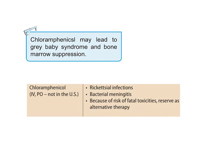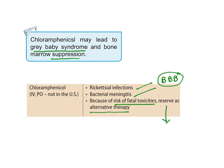These are the main problems. In neonates, it is very dangerous — fatal gray baby syndrome. In adults, it may cause bone marrow suppression. When you see its uses, it is used to treat rickettsial infection and bacterial meningitis. It can cross the blood-brain barrier, hence it is used to treat bacterial meningitis. But because of the risk of fatal toxicities, it is reserved only as alternate therapy — that means when no other drug is effectively working, then only chloramphenicol can be used.